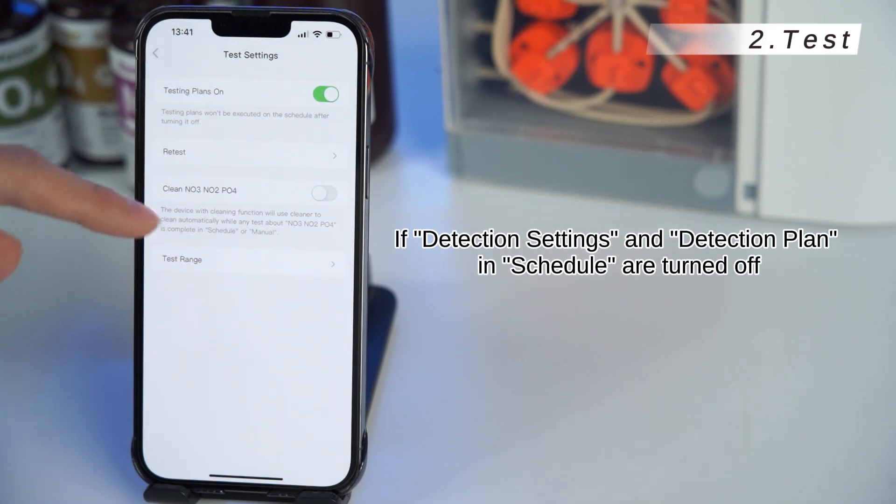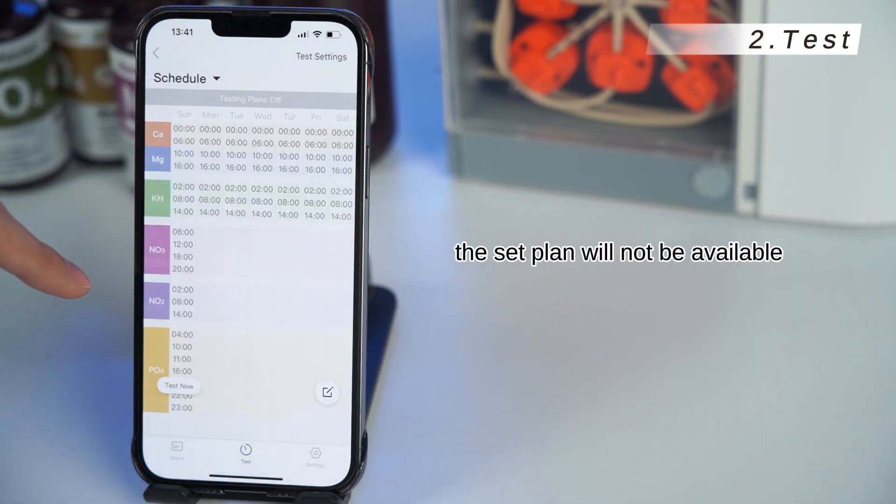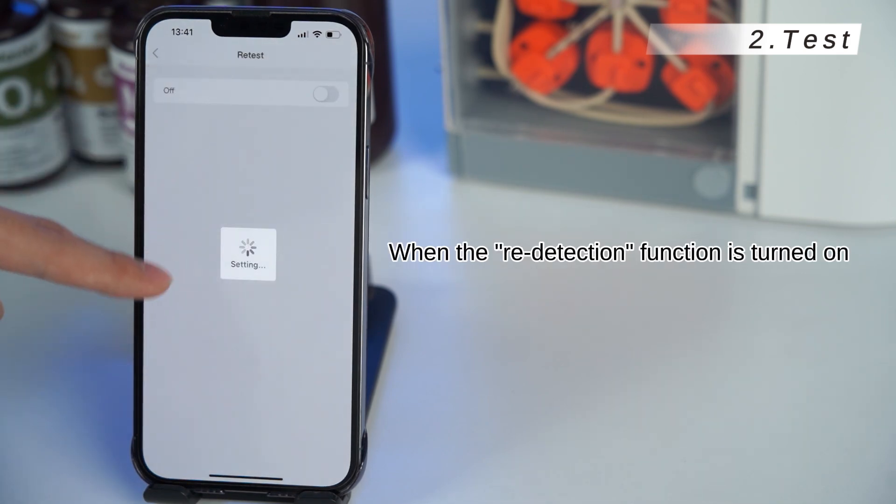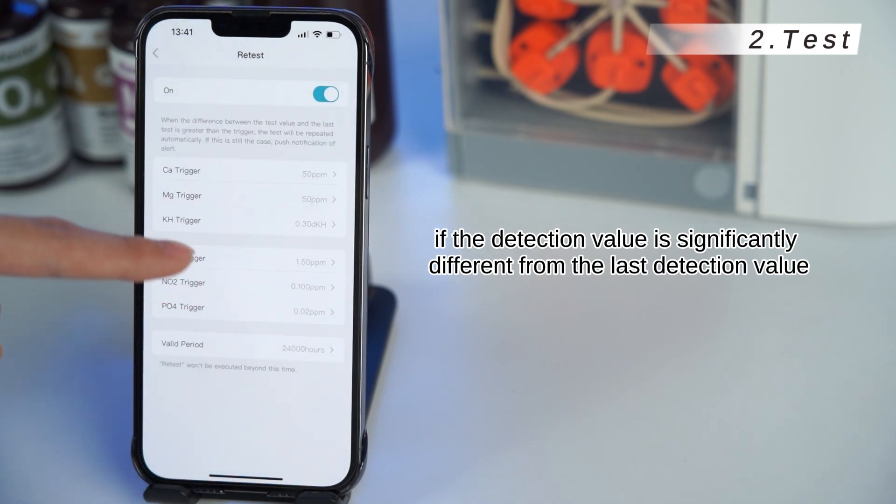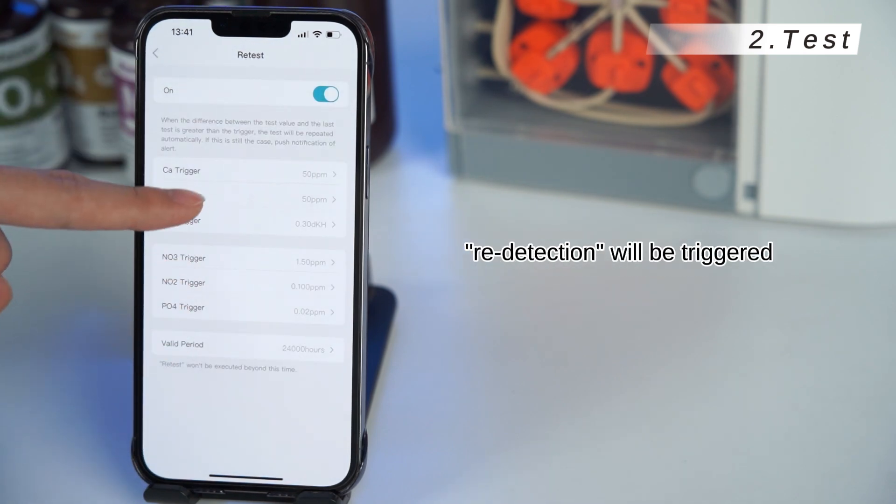If detection settings and detection plan in schedule are turned off, the set plan will not be available. When the redetection function is turned on, if the detection value is significantly different from the last detection value, redetection will be triggered.